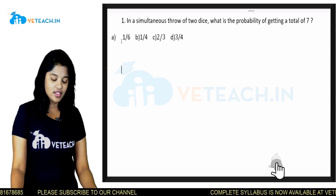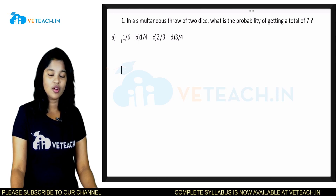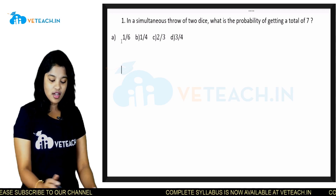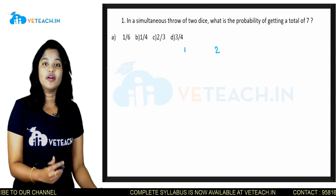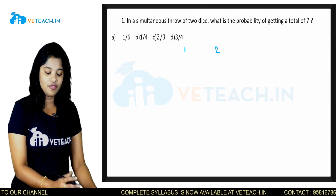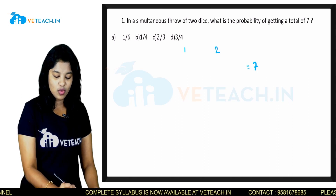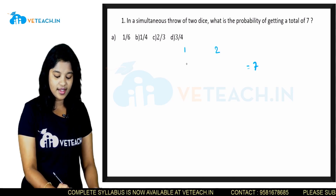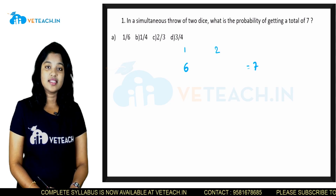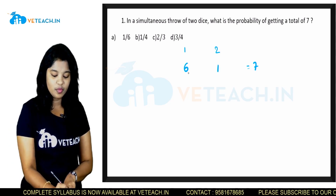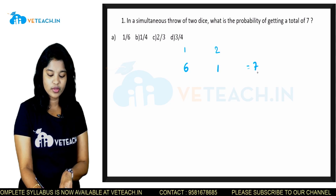In a simultaneous throw of two dice, what is the probability of getting a total of 7? So, total they are using two dice. The number appeared on the dice — if we add those two numbers, it should give a sum of 7. Suppose if die one has faced the 6 side, the other one should be facing 1, so 6 plus 1 equals 7.